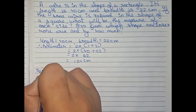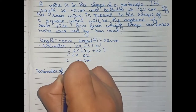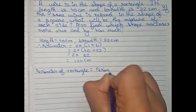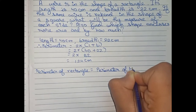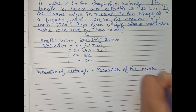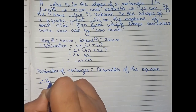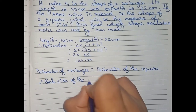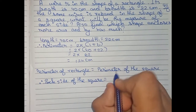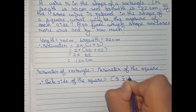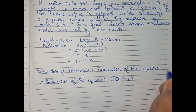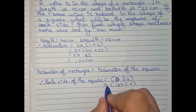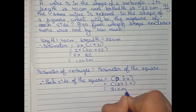Now, the perimeter of the rectangle equals the perimeter of the square. Therefore, each side of the square equals perimeter divided by 4. Our perimeter is 124 centimeter, divided by 4, which becomes 31 centimeter.